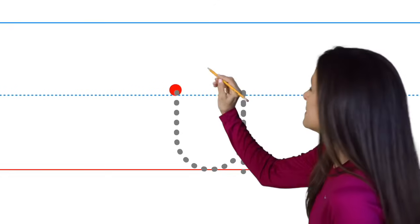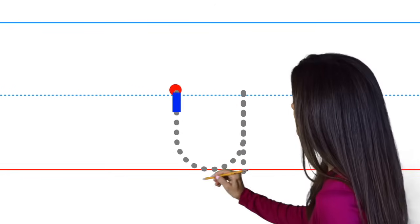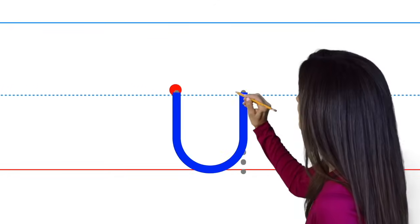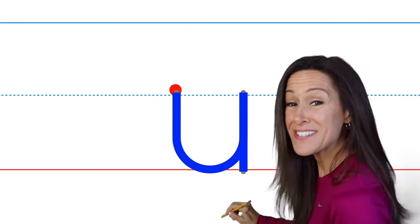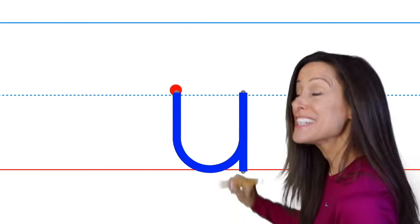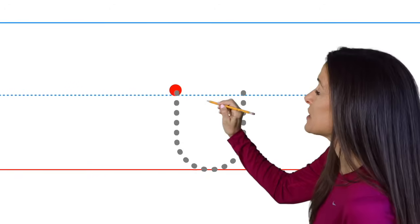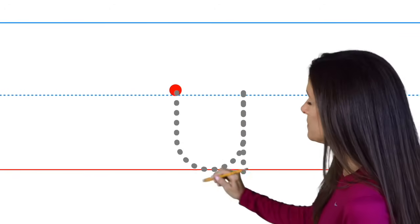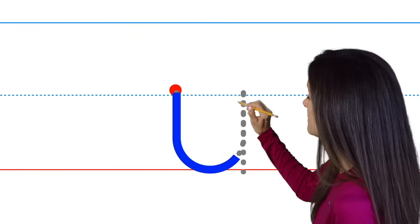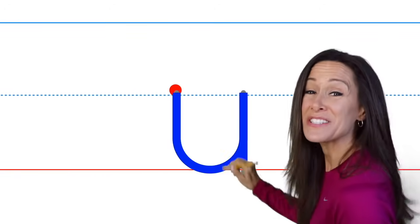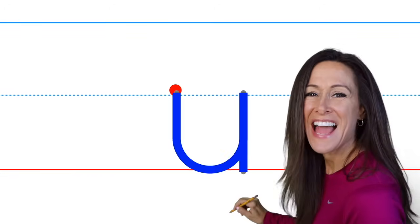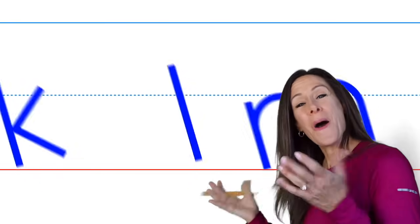U starts at the top, go down, loop up, then a straight line. U starts at the top, go down, loop up, then a straight line.